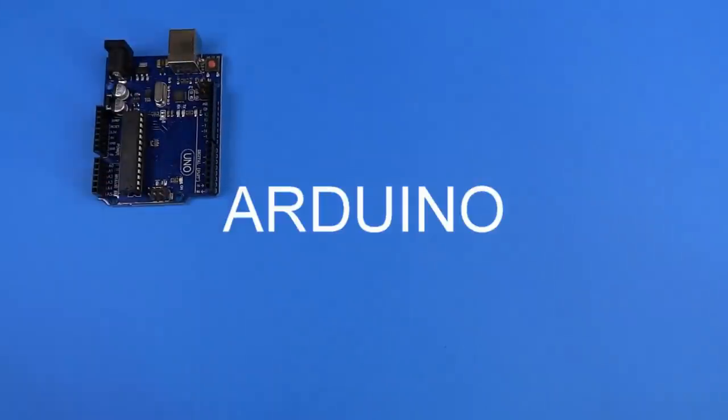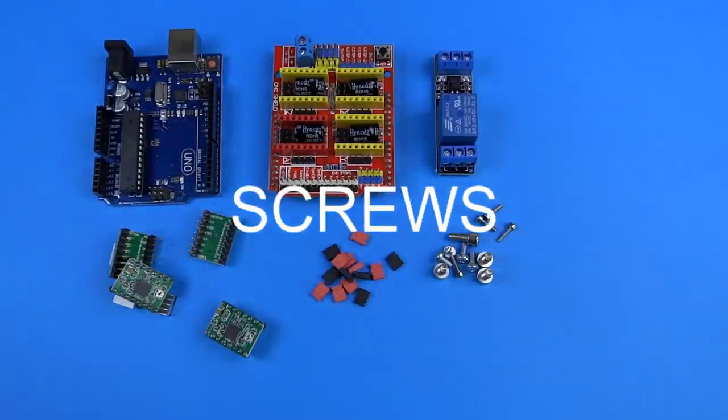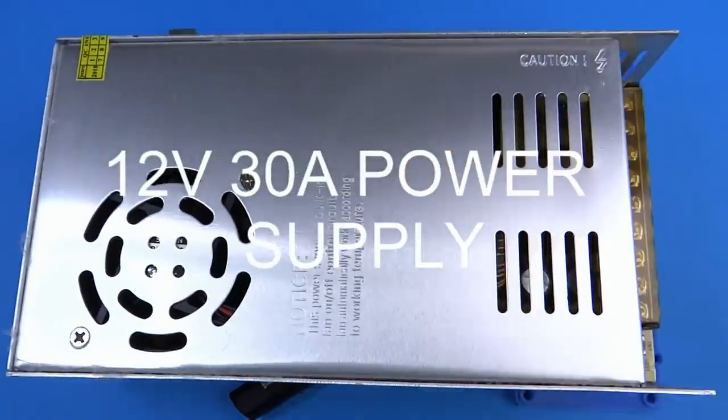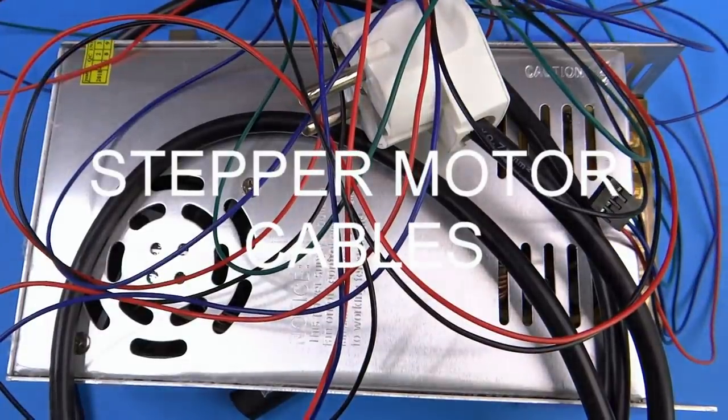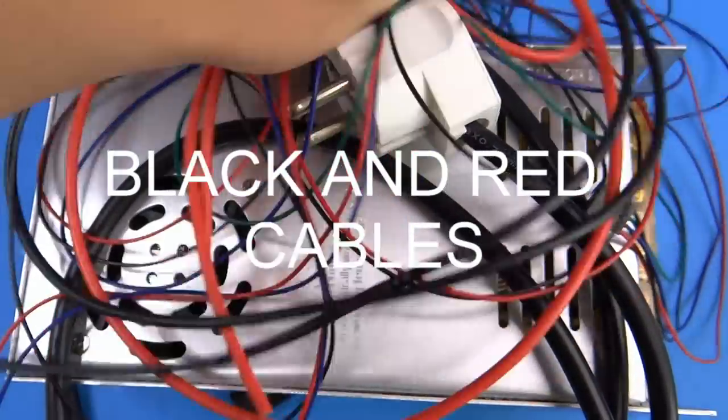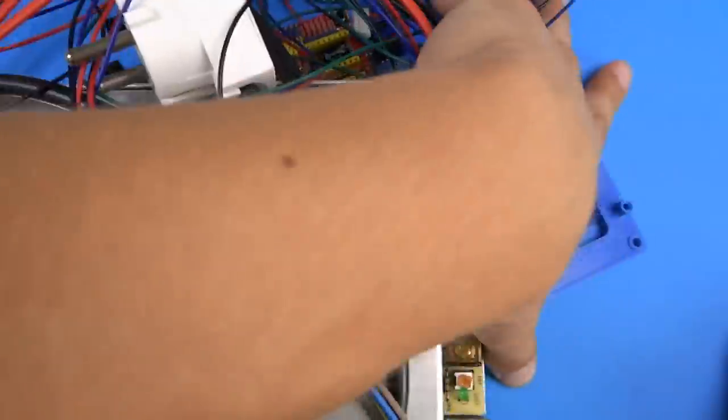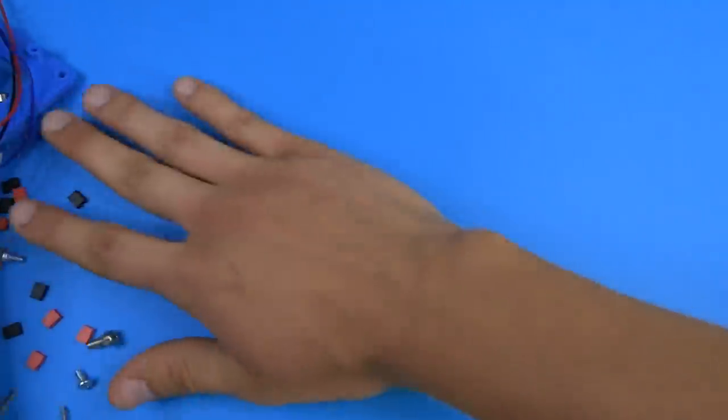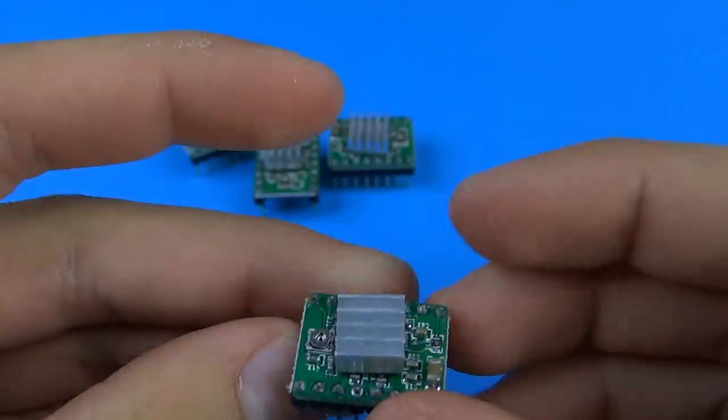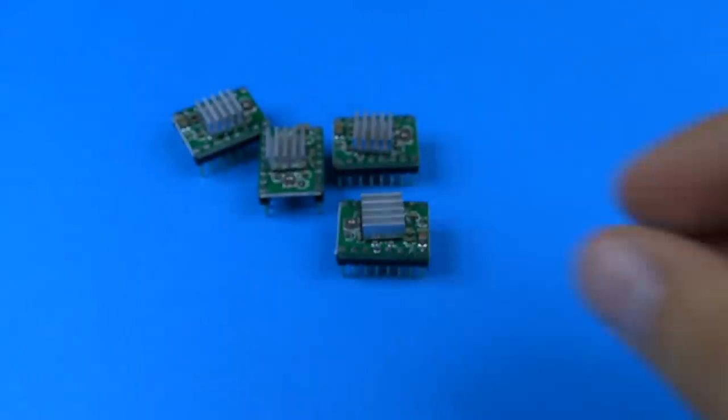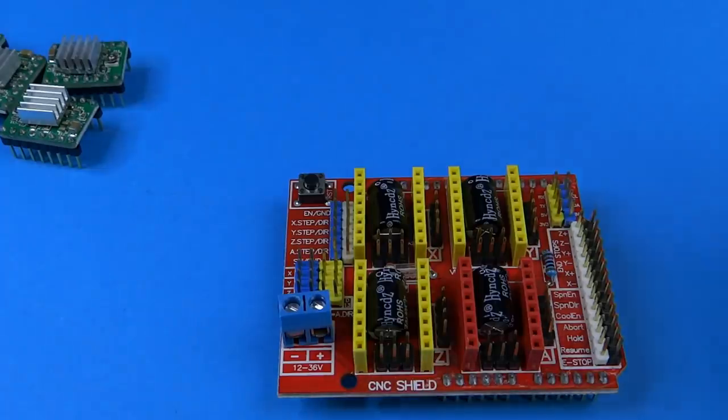And now let's quickly go through all of the parts that we need to connect the electronics. When you have all of the components, we can start by fixing radiators to stepper motor drivers. It will help them to stay cool while milling.